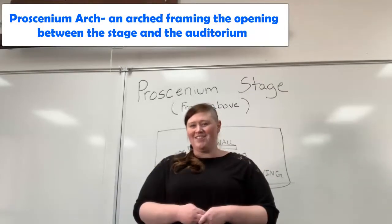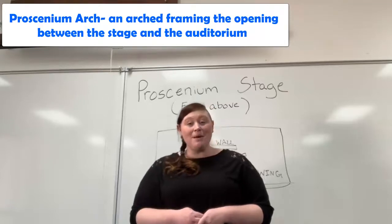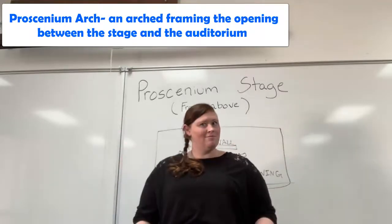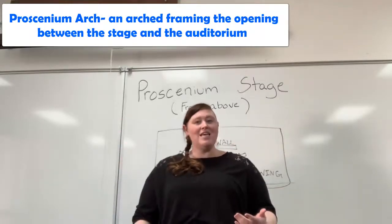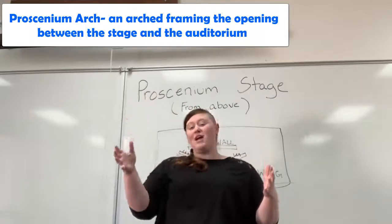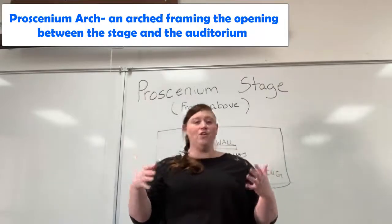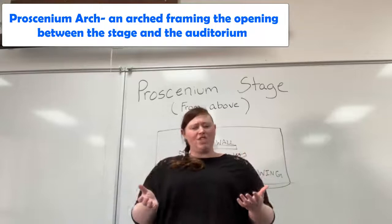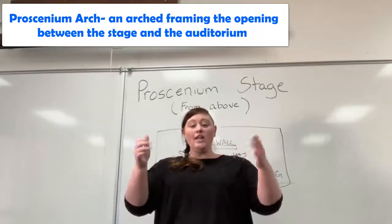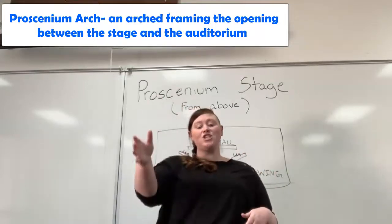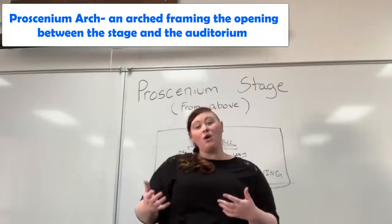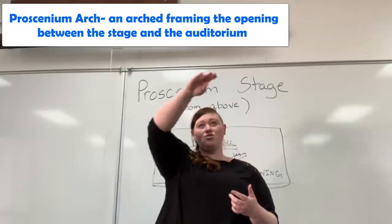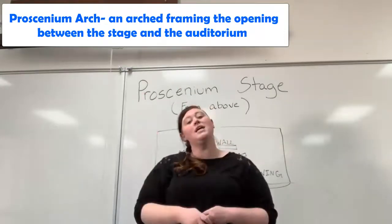What is the proscenium arch? So if you're an audience member — pretend you're an audience member — you're looking at a wall. Doesn't sound very interesting, does it? But there's a big square, rectangular, half-oval hole cut into that wall. It's sort of like a picture frame. And through this hole in the wall, you see the play — you see the action of the play, where the set is, where the performers are, all of that. That hole in the wall is called a proscenium arch.